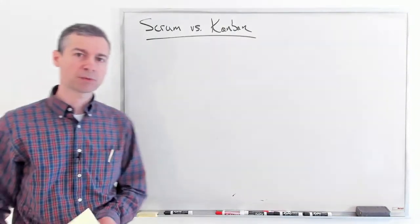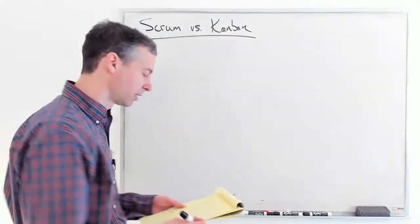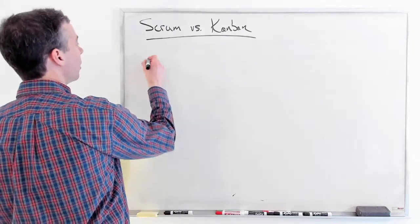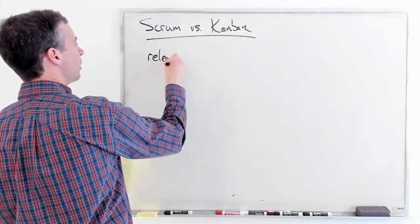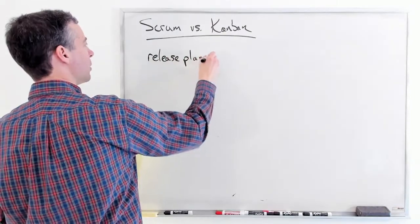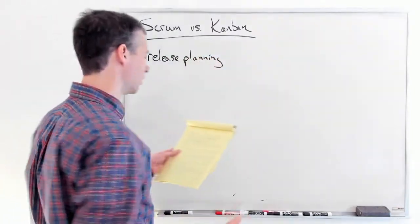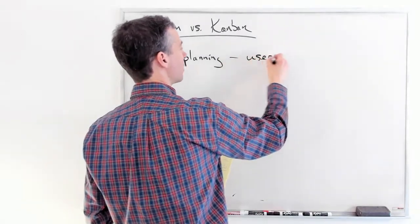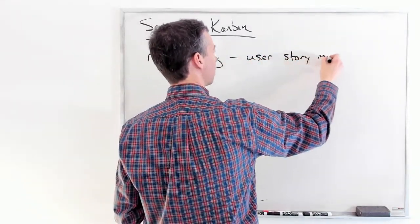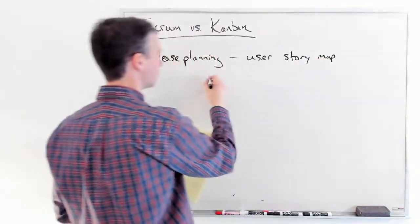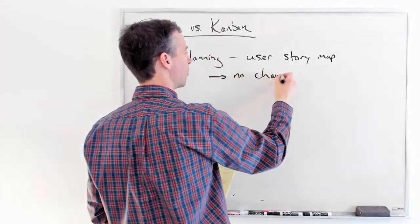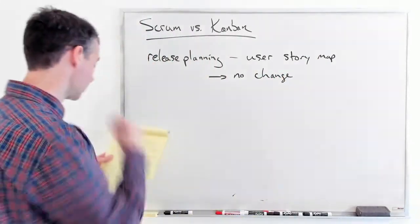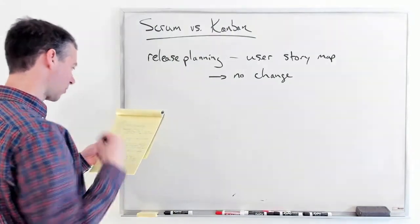Let's talk quickly about some differences between Scrum and Kanban, and let's go through the stages. What about release planning? We figure out this big notion of what we do — things like user story maps and stuff like that. There's no change from Scrum; we do the same things for Kanban. This high-level planning that all projects need stays the same.